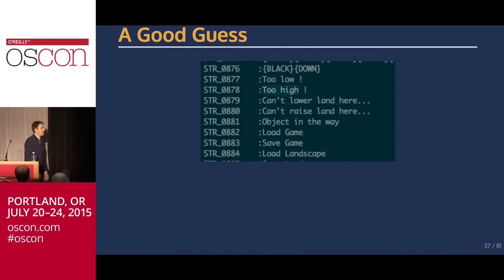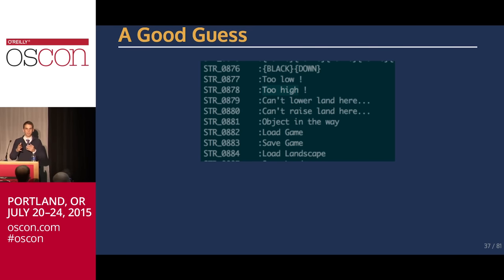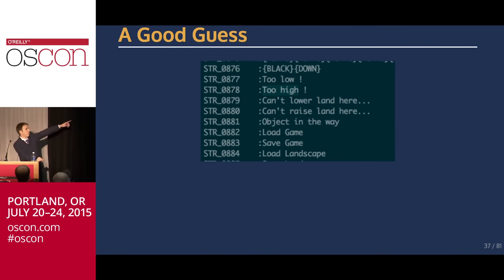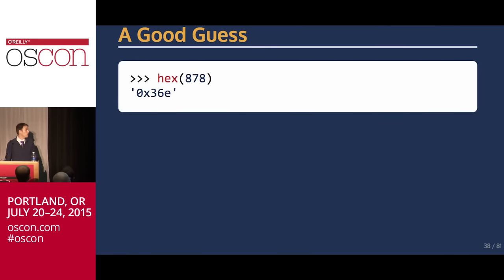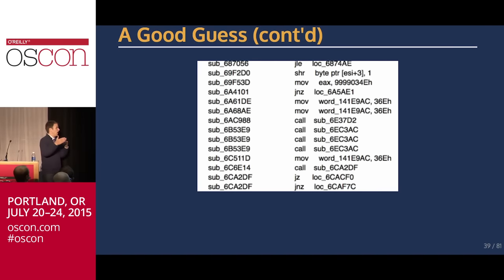I'll skip the large amount of time where I didn't find this. I ended up finding it by looking at strings in the game. This is a really useful technique for any code you don't know — start with things you can see on screen and work backwards from there. There was a string that said 'too high,' which I knew came up when you try to build too high — the game has memory constraints. So somewhere around there, it would be checking the height and comparing to see whether it was too high. The game is all stored in hex, so I opened a Python interpreter, took string 878, turned it into hex, and searched for it in the game.